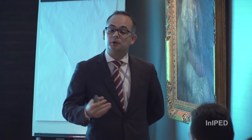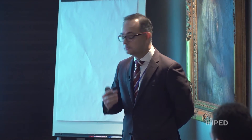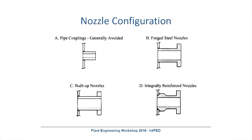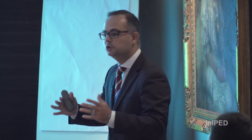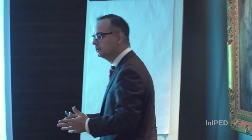We have different nozzle configurations that we are going to be able to choose from in order to design our pressure vessel. We have pipe couplings, we have forged steel nozzles, we have built-up nozzles — this is the most typical configuration. We are going to be talking about this later in the next slide. And we have integrally reinforced nozzles — a solid piece of metal that is going to be tailored according to every specific design. Most expensive, more reliable.